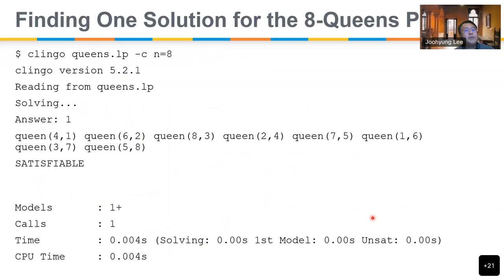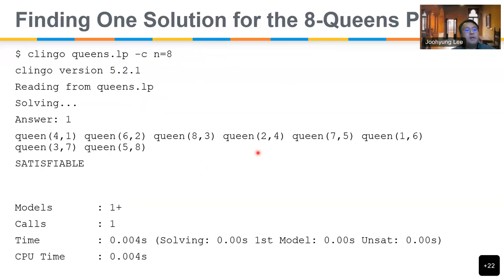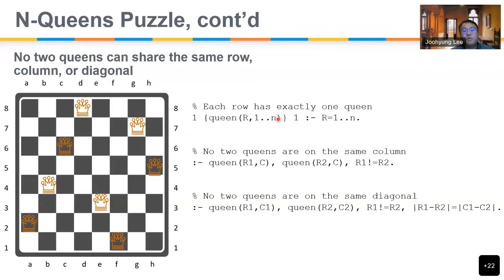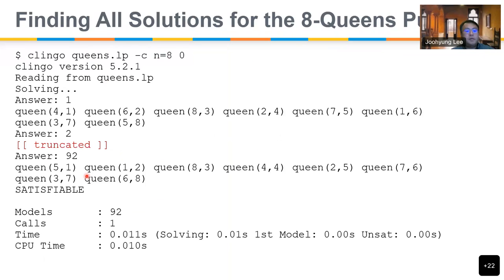Given the description of the problem, this is the input to the Klingo program. You specify the input file queens.lp, and then dash-c is used to declare constants. So n=8. You can also put 0 at the end and you will get all 92 solutions, which it can generate in a short amount of time.